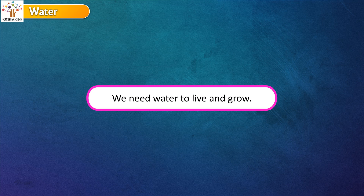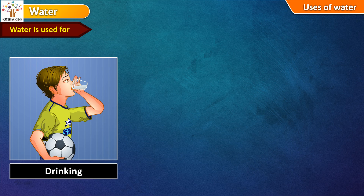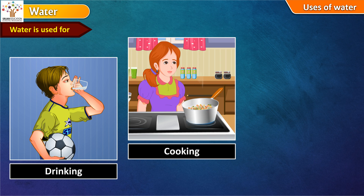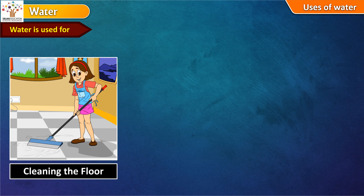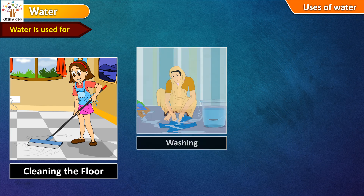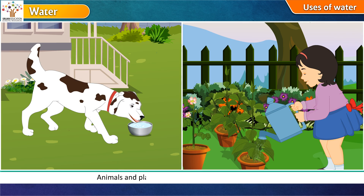We need water to live and grow. Uses of water: Water is used for drinking, cooking, bathing, cleaning the floor, washing, and putting out a fire. Animals and plants also need water to live and grow.